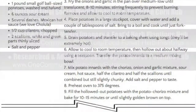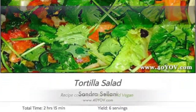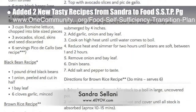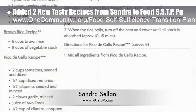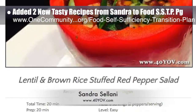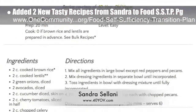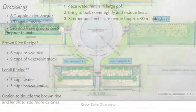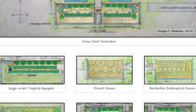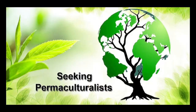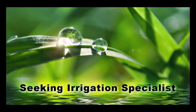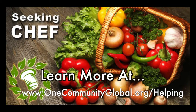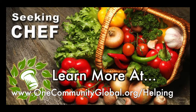These first recipe lists will grow as our food experts continue the process of designing the food self-sufficiency transition plan for remote village construction. We also added two new tasty recipes from Sandra Solani, vegan chef and author of What's Your QB? — tortilla salad and lentil and brown rice stuffed red pepper salad. In this area of our open source project, we are seeking permaculturalists, an irrigation specialist, a surveyor, and a chef to join our team as either consultants or pioneers who will be moving onto the property with us.